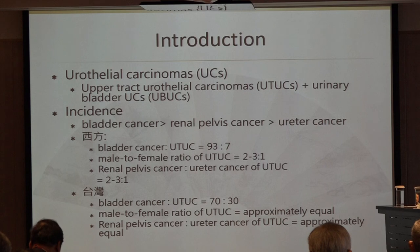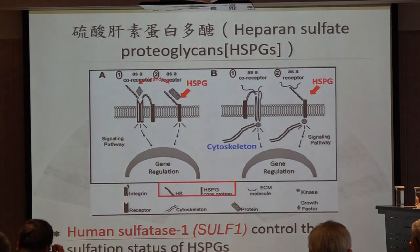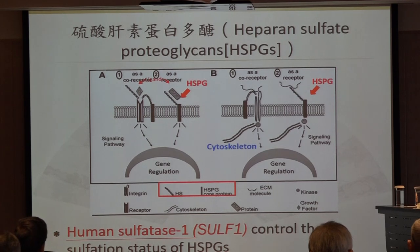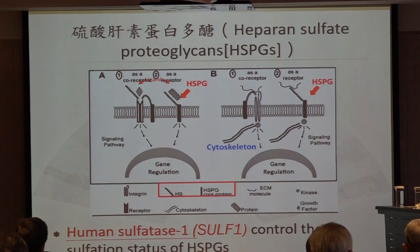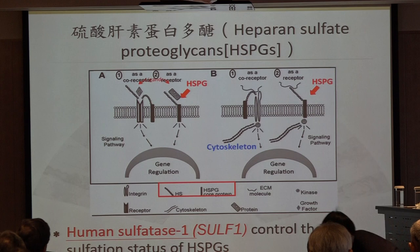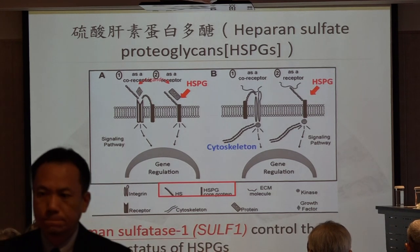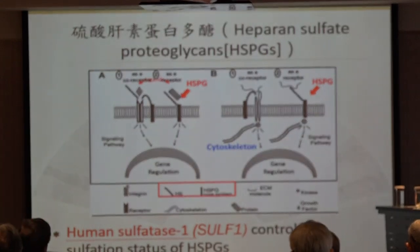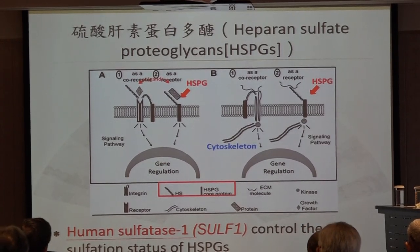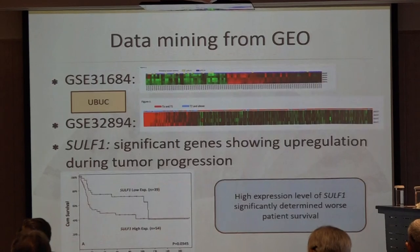HSPG is a crucial element of the extracellular matrix, playing an important role in various biological processes and organ systems. SOFTIN1 controls the sulfation status of HSPG, and it can be up- or down-regulated in various malignancies.